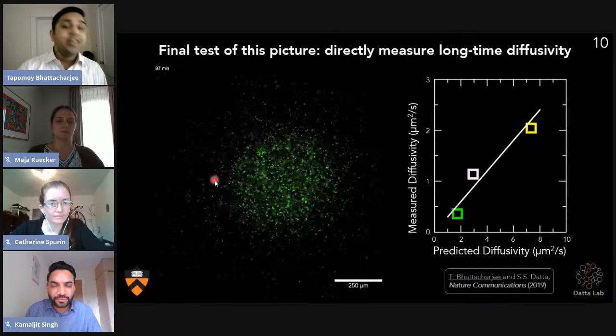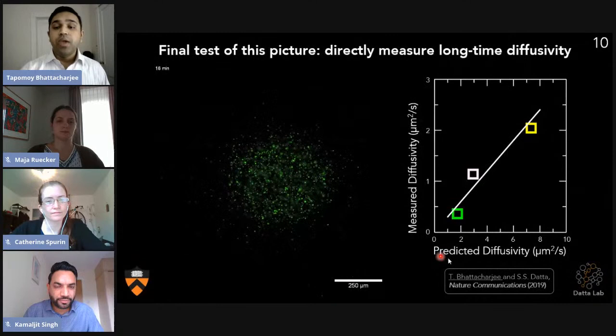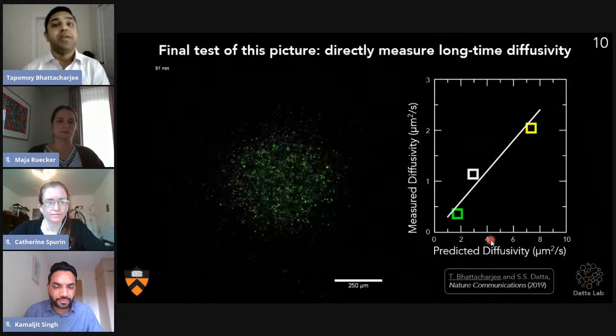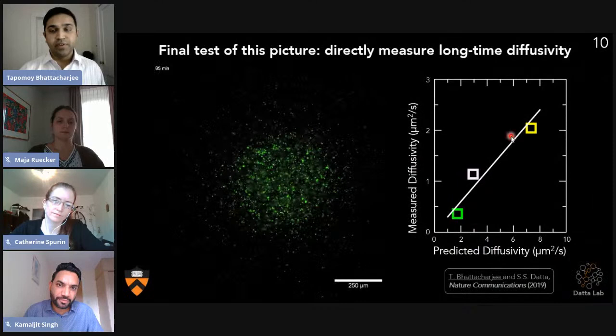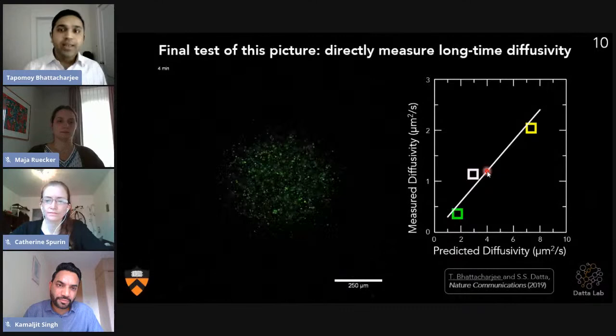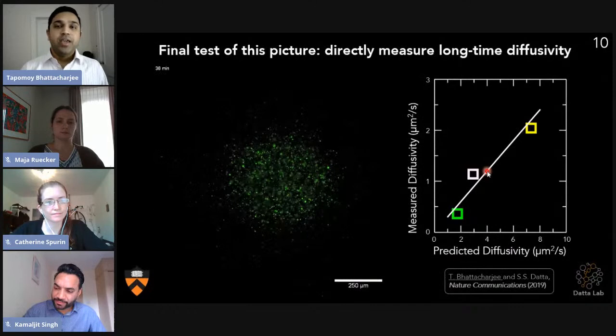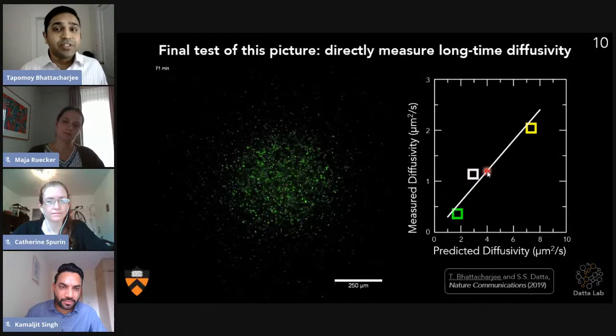Finally, what we did is we injected a bolus of bacteria inside our porous medium and measured their macroscopic diffusivity. We have also predicted a diffusivity from our measured hop length and measured trap time. We find that our measured diffusivity matches with our predicted diffusivity within a factor of three. So what that means is we can predict the long-term diffusivity of bacteria just by watching single-cell motion in three dimensions.